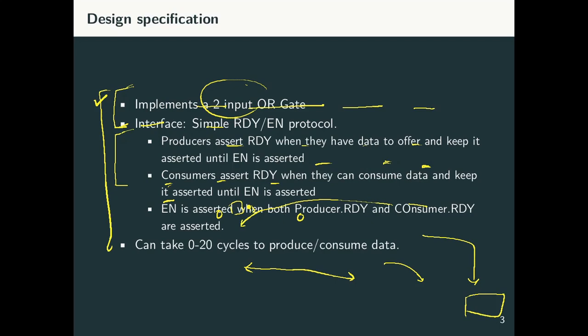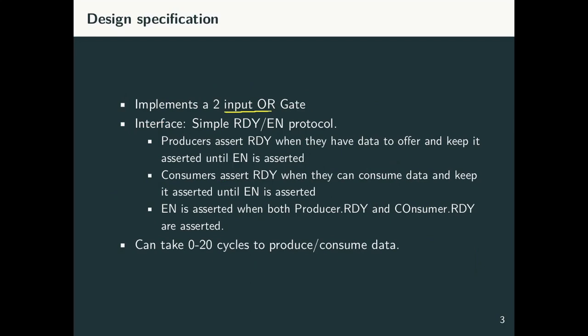Let's move on and see what our design specification was. We are implementing a two-input OR gate with a simple ready-enable protocol. And we have said that our producers and consumers can take somewhere between 0 to 20 cycles for either generating data or consuming data. What it means is that a producer at some point of time might generate data back to back, which is a zero cycle delay. If it is facing some kind of bottleneck issue, then it might take up to 20 cycles to generate the next unit of data. We will typically have somewhere between 0 to 20 as our limits for the delay. We don't expect it to go beyond 20.